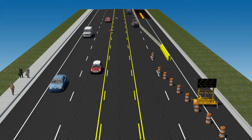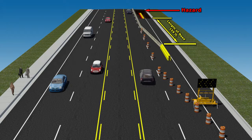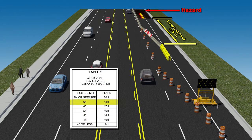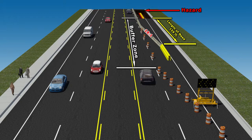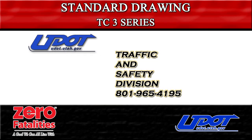In this example, the length of need calculation is 159 feet. The posted speed limit is 65 miles per hour and, according to TC3A Table 2, the flare rate requirement is 18 to 1. TC4A requires a 645-foot buffer space. As you can see, the barrier length of need fits inside the required buffer zone. You have the option to install the barrier without a flare, but if you do so, the length of need will increase to 231 feet.